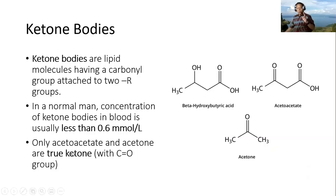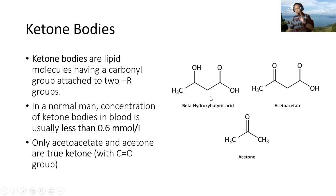As we can see from this picture, the true ketone bodies are only acetoacetate and acetone, because ketone should have a ketone group. But let's see beta-hydroxybutyrate — we cannot see a ketone group in this molecule; instead it has a hydroxyl group. So beta-hydroxybutyrate does not have a ketone group, but even so, it is also classified as a ketone body.